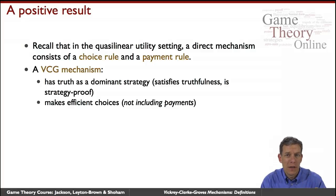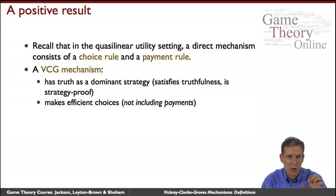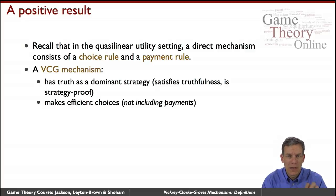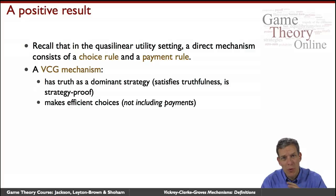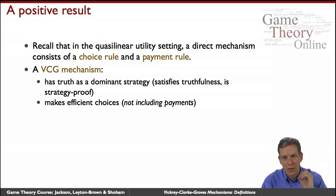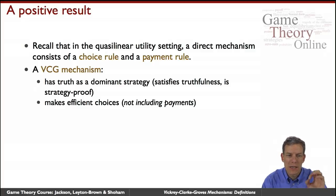We're going to work in a quasi-linear setting, and we'll look at direct mechanisms where society will have a choice rule and a payment rule based on what preferences people report to the mechanism. The nice thing about VCG mechanisms is that they will have truth as a dominant strategy, so people won't have to worry about what other individuals are doing — regardless of what their preferences are, the best thing they can do to maximize their utility is to tell the truth. This mechanism is also going to choose efficient X's.